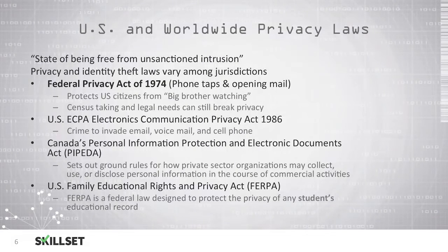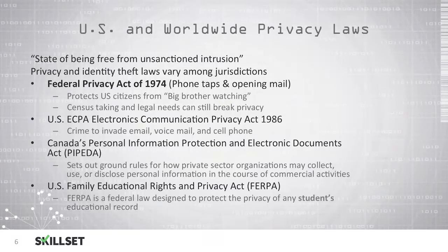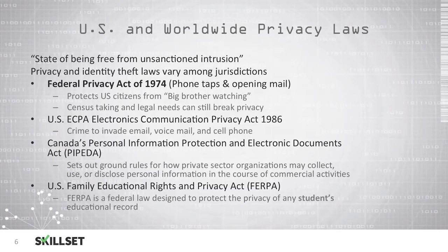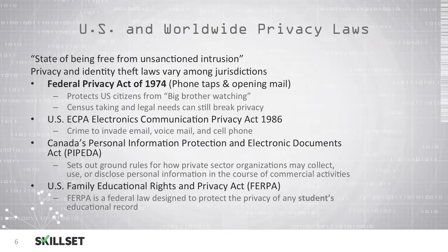An individual's privacy could be described as a state of being free from unsanctioned intrusion. There are several identity theft laws and privacy laws that may vary depending on your jurisdiction. You should be familiar with the Federal Privacy Act of 1974 for the CISSP exam. This was the first time a law was created for privacy involving electronics and prohibits phone taps and opening other people's mail. It was designed to protect citizens from Big Brother watching, and there are certain exceptions such as census or legal needs such as search warrants or court orders which can break privacy in certain situations.